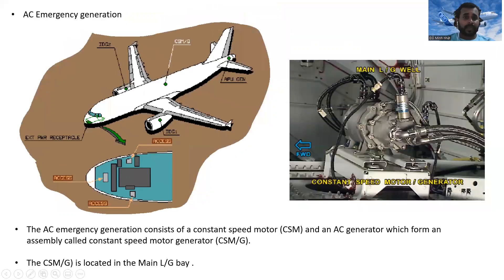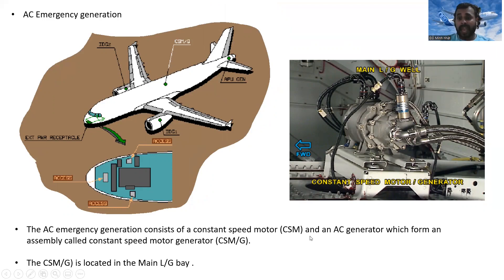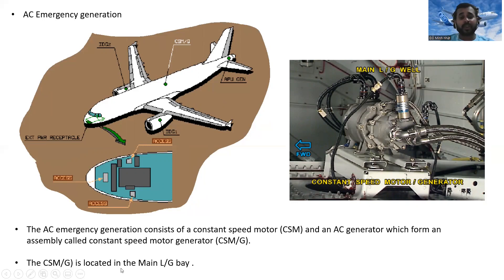For AC emergency generation, the system consists of a constant speed motor and an AC generator, which form an assembly called the Constant Speed Motor Generator. The constant speed motor generator is located in the main landing gear bay — you can see it here in the live view of the main landing gear bay.